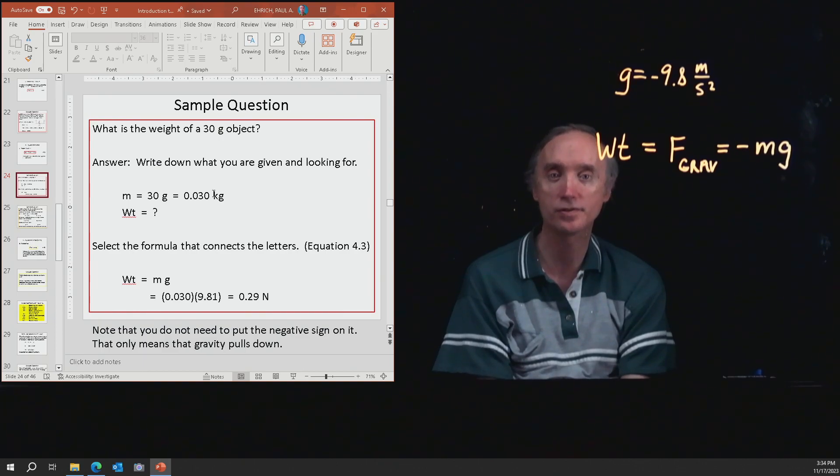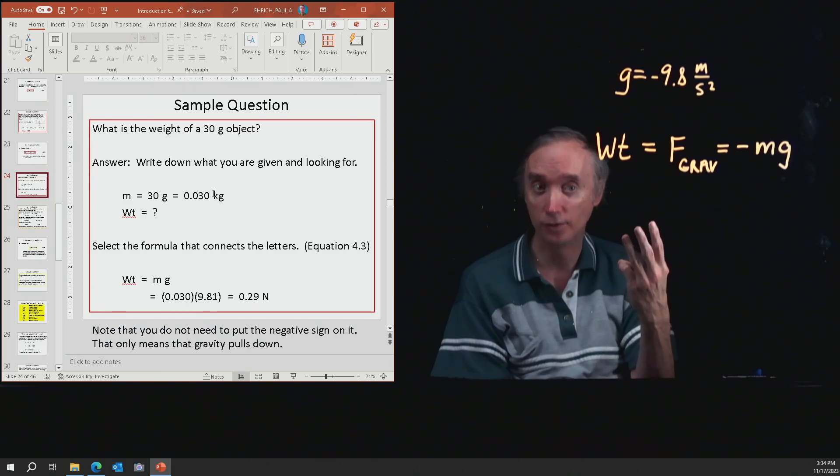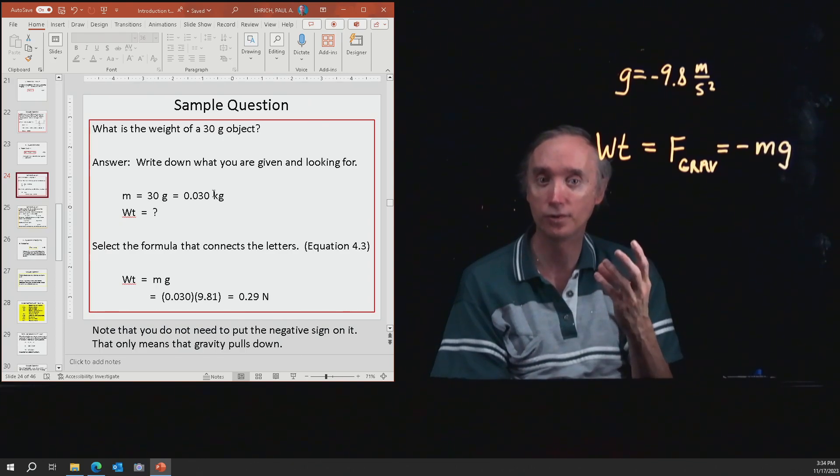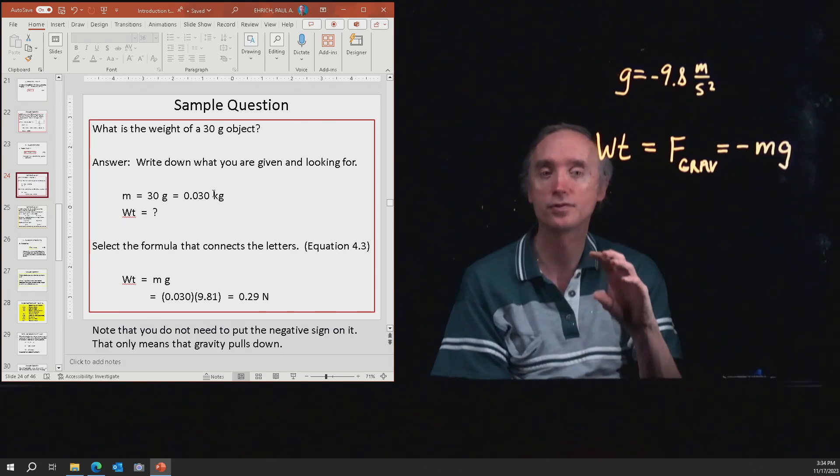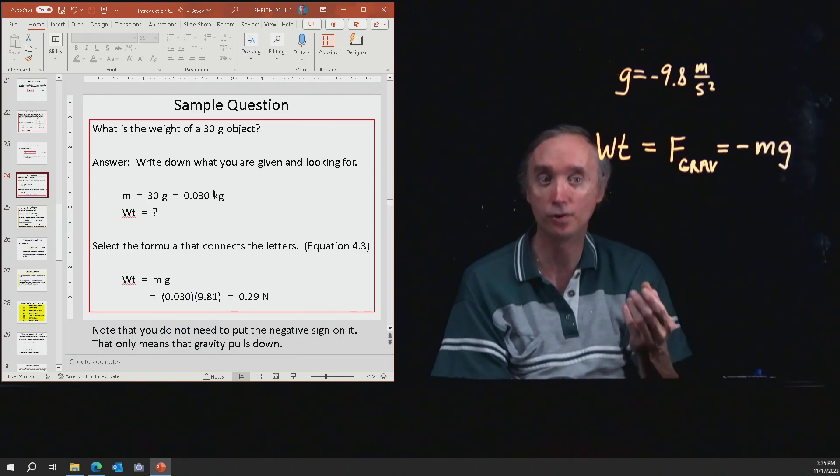So our formula is that weight is equal to mg. So we're going to take our mass, which is 0.030, and then multiply that by 9.81 if you want to go to three significant figures. If you want to go to two significant figures, it would be 9.8. And if you really want to go to one significant figure, you could just say 10. But we're going to go to three significant figures. And so when you multiply that together, you get 0.29. And then put the N on the end of it because your weight is a force, and forces are measured in Newtons.